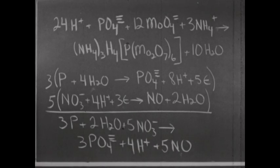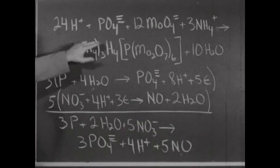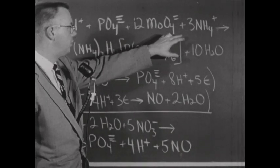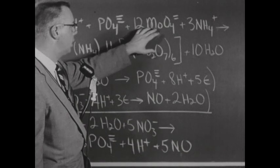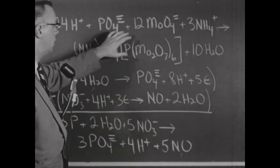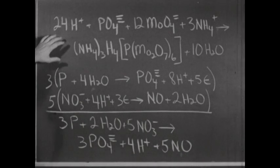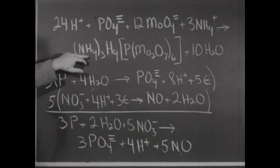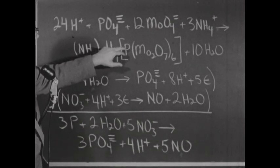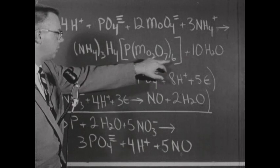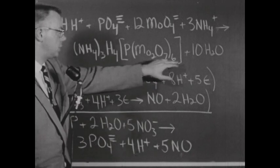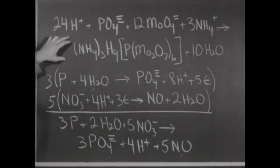We developed a test for the presence of the phosphate ion by treating a solution containing the phosphate ion with an excess of nitric acid and a solution of ammonium molybdate containing the molybdate ion, MoO4⁻. We obtained a yellow precipitate — ammonium phosphomolybdate — which may have a variable composition, but one representation uses three ammonium ions, four hydrogens, phosphorus, attached to six Mo2O7 groups. This precipitate is yellow and serves as an identification of the phosphate ion.